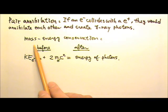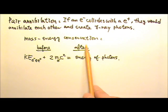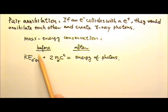In pair annihilation, the mass energy is conserved. Before the annihilation, the electron and positron's kinetic energy plus their E equals mc squared turns into the energy of the photons produced.